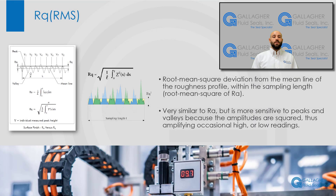Moving on, we have RQ, or RMS, which is the root mean squared deviation from the mean line within the sampling length, and is the root mean square of RA. While RMS is similar to RA, the calculation is more sensitive to peaks and valleys because the amplitudes are squared, thus magnifying occasional high or low values.